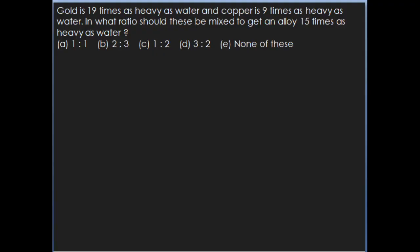Here comes our first question. Gold is 19 times as heavy as water and copper is 9 times as heavy as water. In what ratio should these be mixed to get an alloy 15 times as heavy as water?